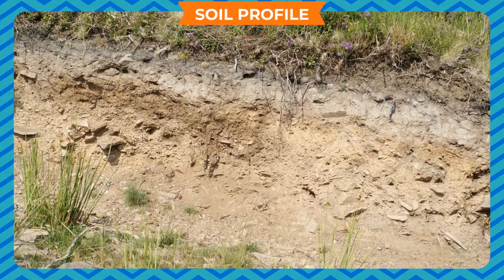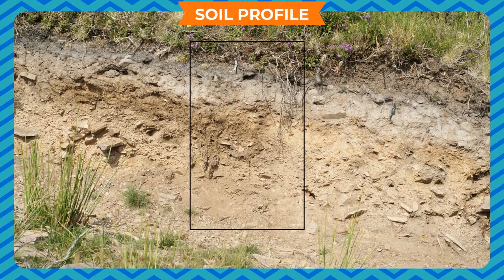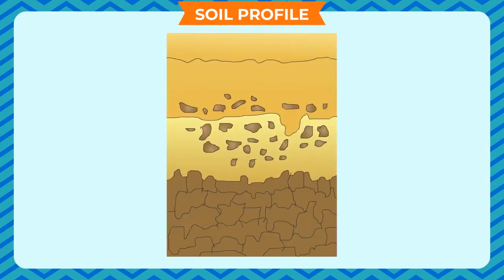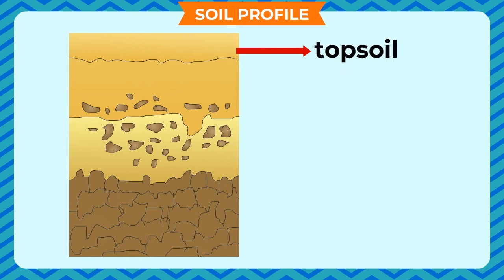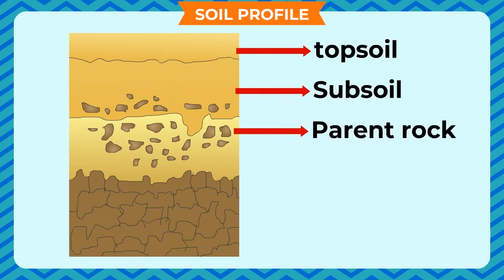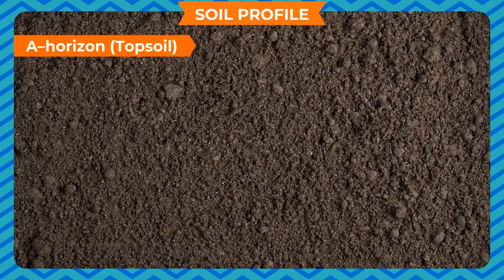Soil profile: The vertical section of the soil showing different layers is known as soil profile. There are different horizons of soil such as topsoil, subsoil, parent rock and bedrock.